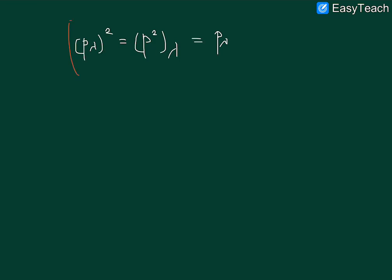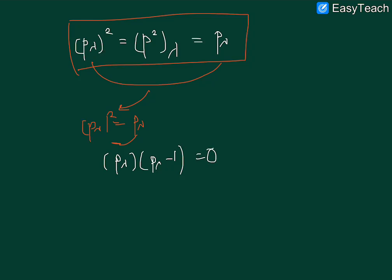From these two I get (P_λ)^2 equals to P_λ. I take that on the left-hand side: P_λ(P_λ - 1) = 0. Then that gives me P_λ = 0 or P_λ = 1. So that is the solution of my second part.